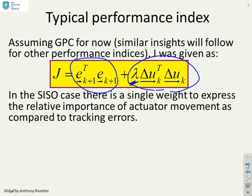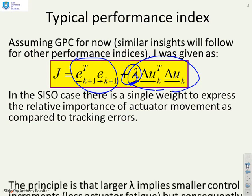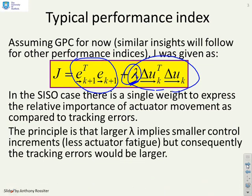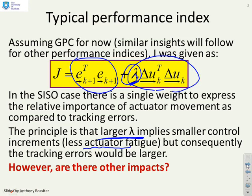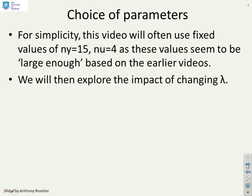Now as you can see in the SISO case there's a single weight, this lambda term, which expresses the relative importance of actuator movement as compared to tracking errors. The principle is quite simple: if you make lambda larger then what it's saying is I don't want the control to change, I want the control increments to be small. Logic for doing that could be less actuator fatigue, and the consequence is that you may have larger tracking errors. So if you increase lambda you expect the input to move more slowly but the tracking errors may be larger. However there may be some other impacts as you will see as we go through the examples.